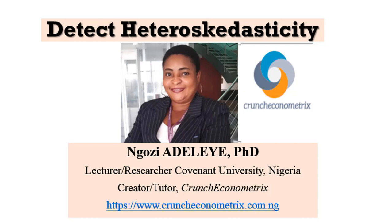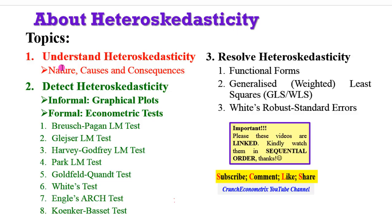Thank you for staying with me on Crunch Econometrics, still on the Heteroskedasticity Series. In this video, we will consider ways of detecting the problem of heteroskedasticity. In the previous video, we understood the nature, causes, and consequences of the problem. Now in this video, we are going to take a look at informal and formal ways by which we can detect the problem of heteroskedasticity in any model.